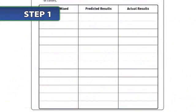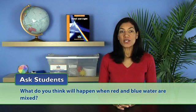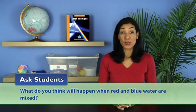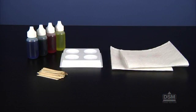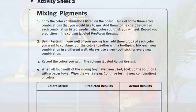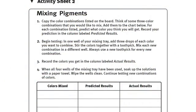To begin the activity, bring the students' attention to the chart you prepared and ask, what do you think will happen when red and blue water are mixed? Record their predictions, but do not reveal the correct answer. Next, divide the class into teams of four and distribute the materials. Give each student a copy of Activity Sheet 2 and review the instructions as a class.